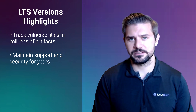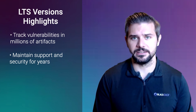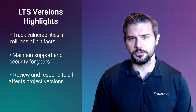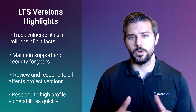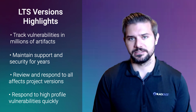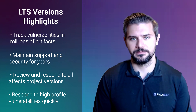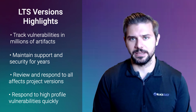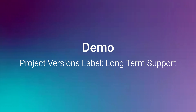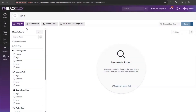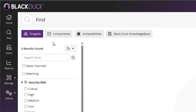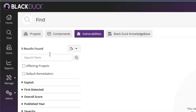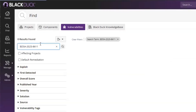This is important for organizations which need to maintain support and security for software versions for years after initial release. The new LTS Effect Projects page makes it easier to review all affected project versions when a new high-profile vulnerability is discovered. Let's jump into the demo. Here we jump into BlackDeck SCA on the Find page. Now let's go to the vulnerabilities page and search for a specific vulnerability.